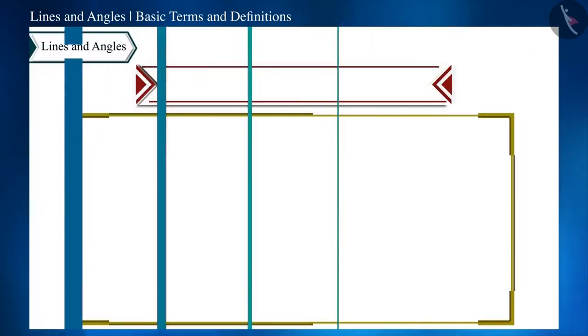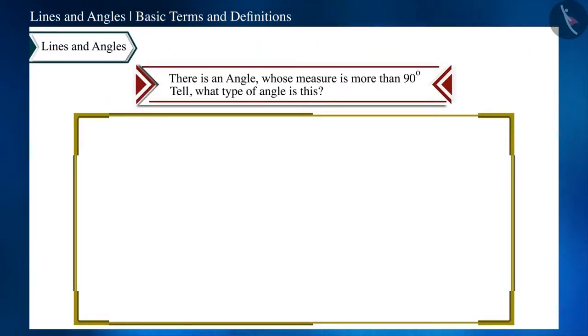Now, let's move ahead and see another question. There is an angle with a measure more than 90 degrees. State what type of angle this is.